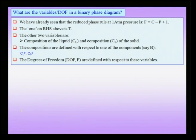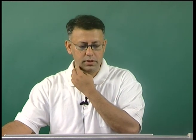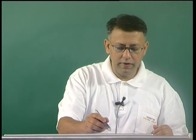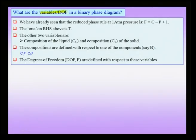Before proceeding further: in a unary phase diagram the only variables were pressure and temperature, with no composition variable. But in a binary phase diagram we need to understand what the variables and degrees of freedom are. The reduced phase rule at 1 atmosphere is F equals C minus P plus 1, and in a binary phase diagram one of the variables is automatically temperature.